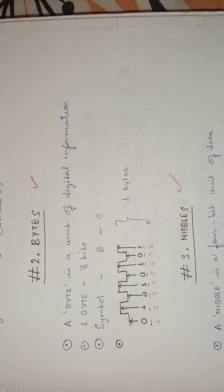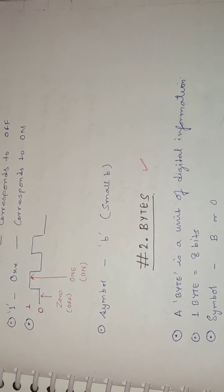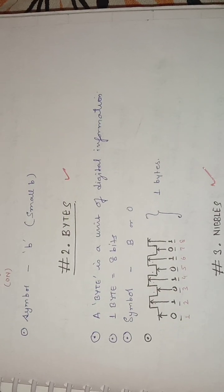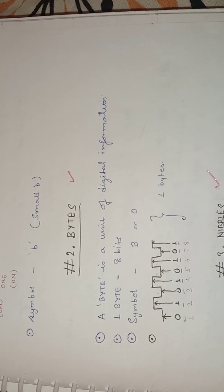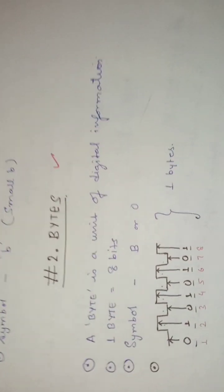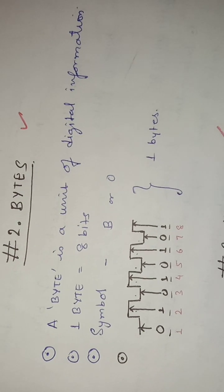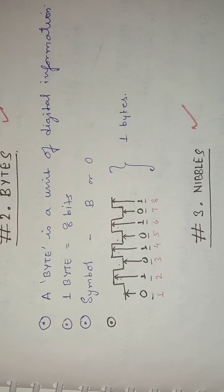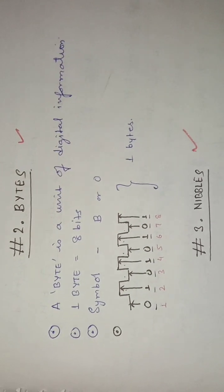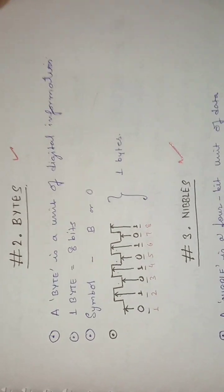A byte is a unit of digital information. One byte is equal to eight bits. One bit is either a zero or one condition, and when eight such zero-and-one conditions are taken together, they are known as a byte. The symbol for byte is a capital 'B'. You can see here that one byte consists of eight high-and-low combinations of signals represented by zeros and ones. It is like switching a switch on and off eight times to get that kind of signal — that is one byte.